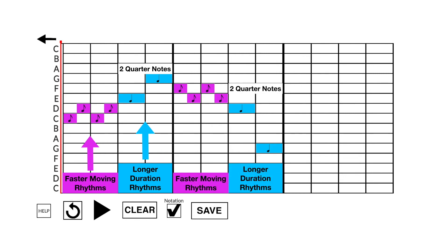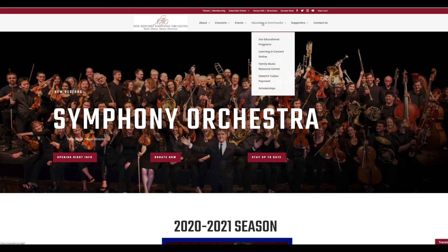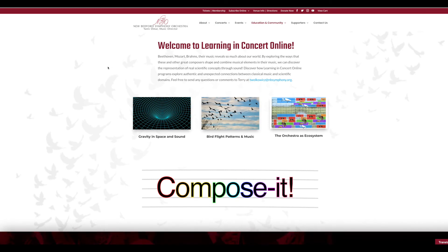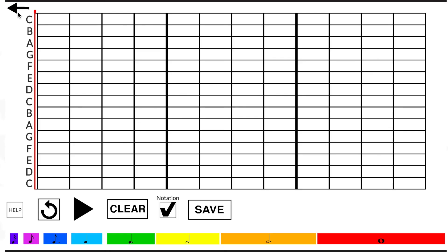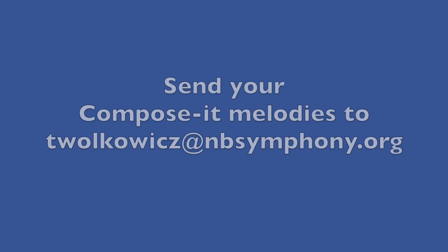Visit the nbsymphony.org website and go to the Learning in Concert online page. There you can click on the Compose-It game and compose your own melody. Let's see if you can create a melody that imitates Vivaldi's rhythm pattern. Faster moving rhythms that are followed by longer duration rhythms. Please save your melodies and send them back to me at the symphony. We will be featuring some student melodies on our website with video performances by our musicians.